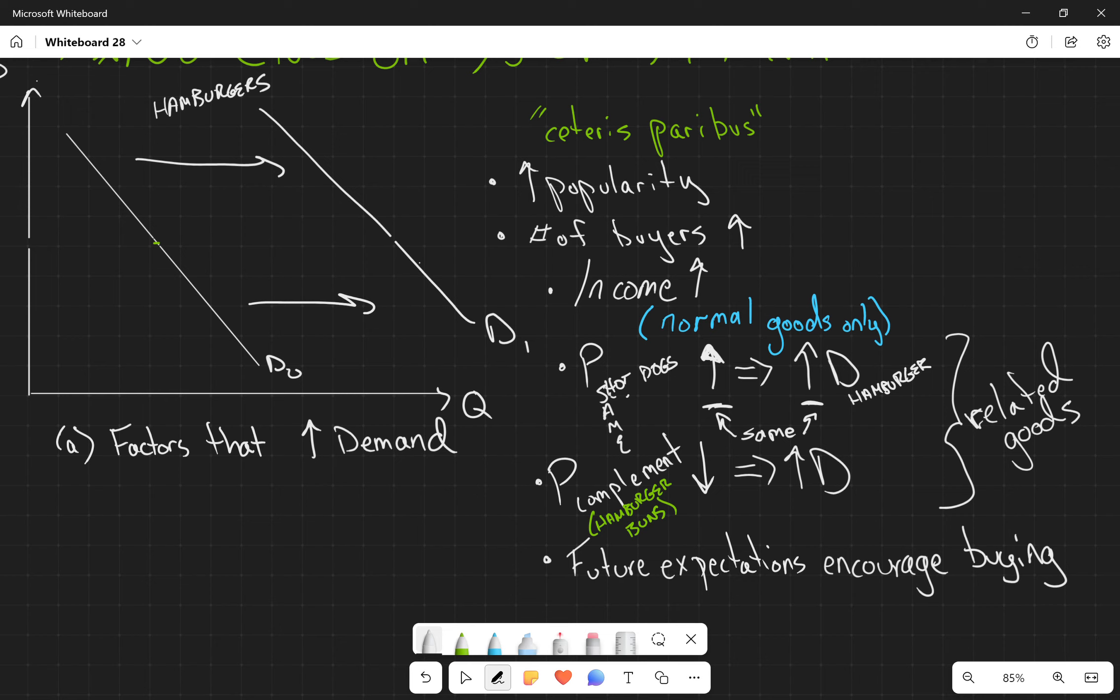All right. Back to textbook stuff. Although I do love these tangents. All right. Any questions about these specific factors? We're going to do our quick little exercise and then we'll come back and we'll talk about supply.